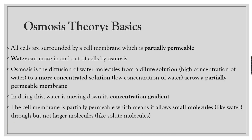All cells are surrounded by a cell membrane which is partially permeable. Whether it be a plant cell, animal cell, fungi, protectors, prokaryotes, or red blood cells — any type of cell — all these cells are surrounded by a cell membrane which is partially permeable. So let's see what that term 'partially permeable' means.